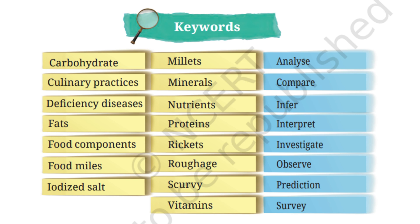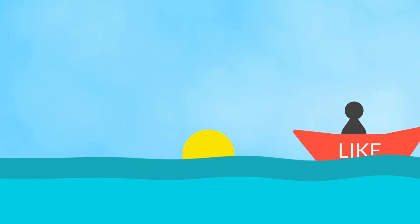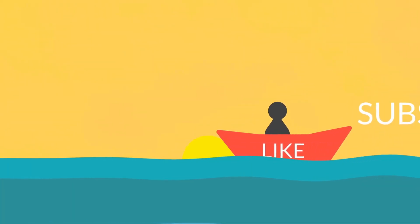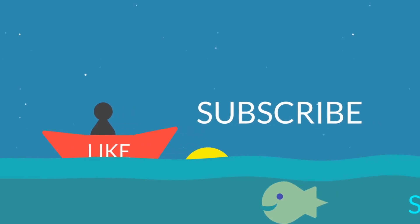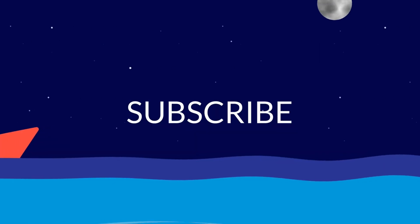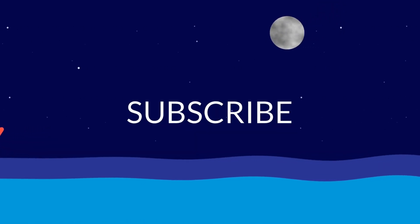Here you can see the keywords from this chapter. That's all for today, my little learners. We have now completed the explanation of Chapter 3, Mindful Eating: A Path to a Healthy Body. I hope you understood the concepts clearly. In the next video, we will go through the questions and answers from this chapter. Till then, take care, eat healthy and bye-bye!